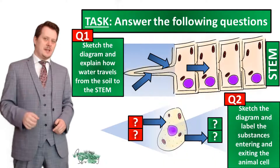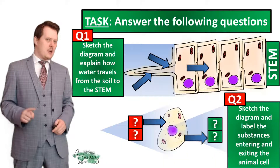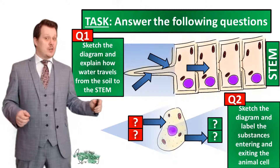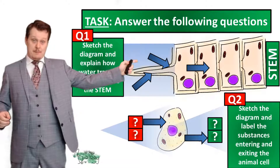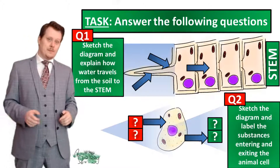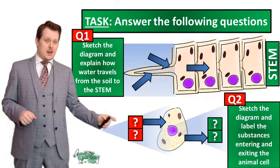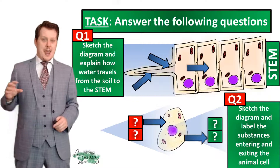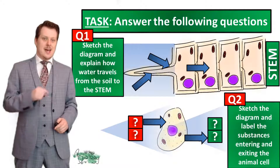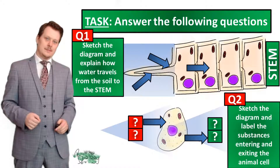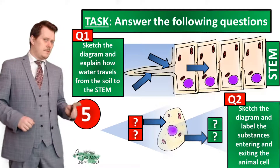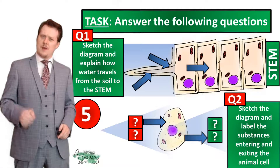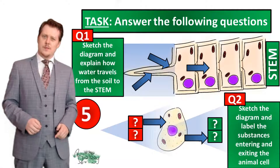Which brings us to our next task. I'd like you to sketch this diagram and explain how water is transported from the soil to the stem. I'd also like you to sketch the animal cell diagram and label the substances entering and exiting the cell. Pause the video if you need more time, and when you're finished we'll go through the answers together.